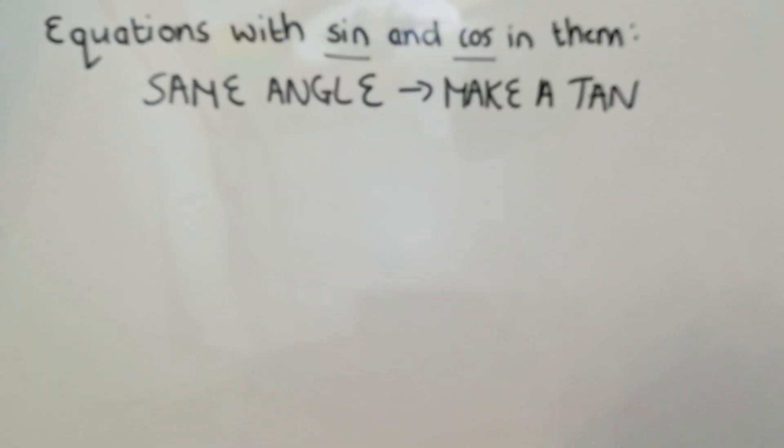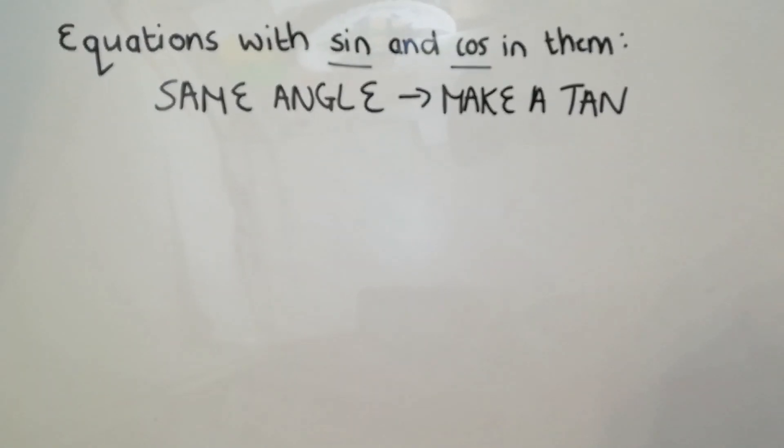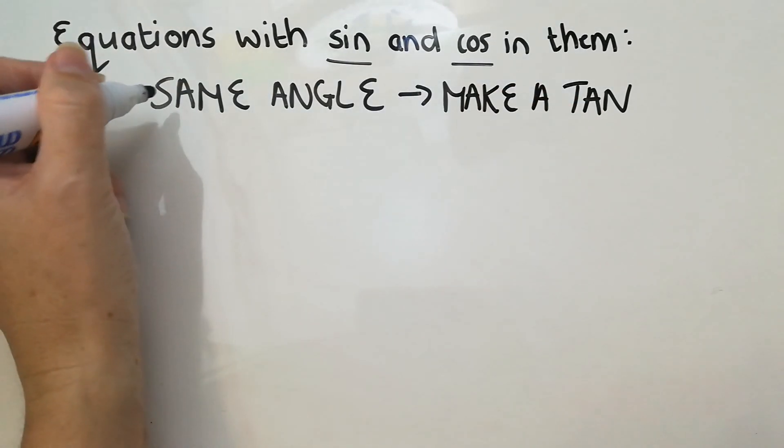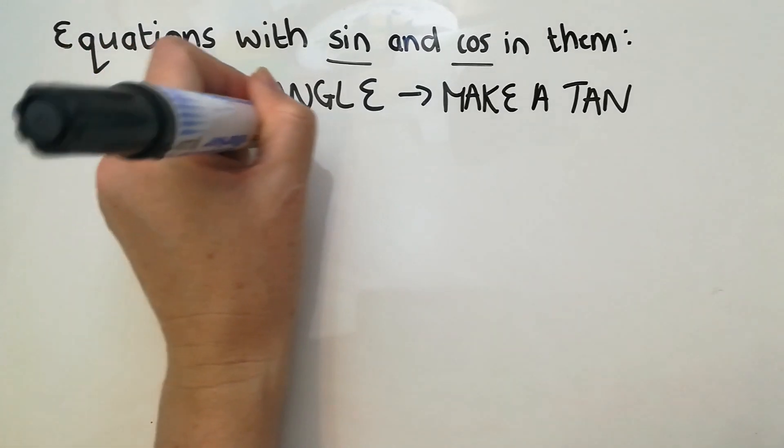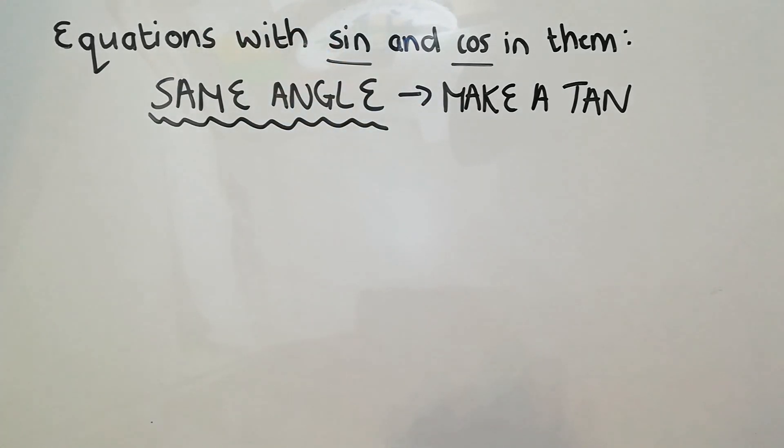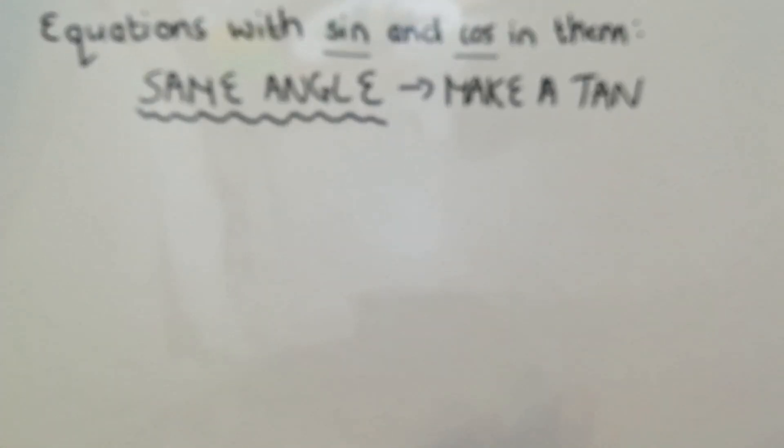I'm going to start with the one that makes a tan, and what you've got to remember is that if you're going to make a tan, you'll see that in a moment, the sine function and the cos function have to be of the same angle.